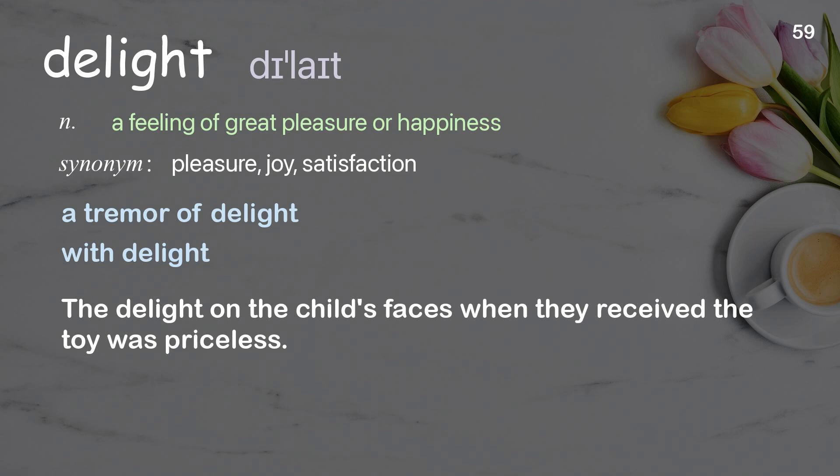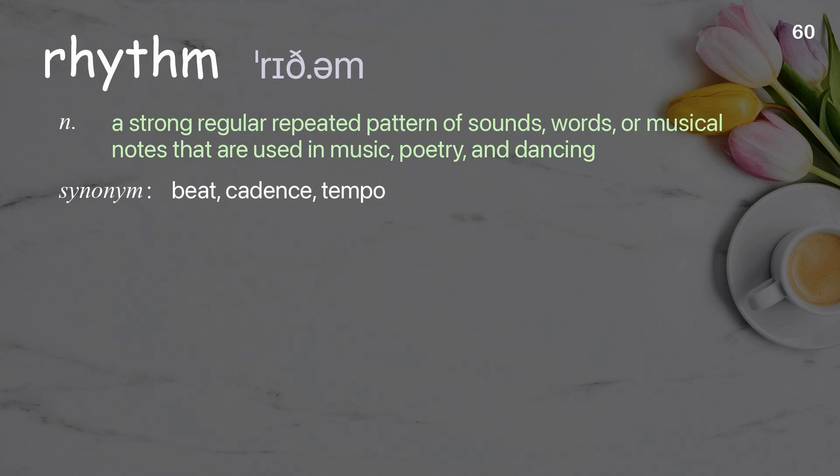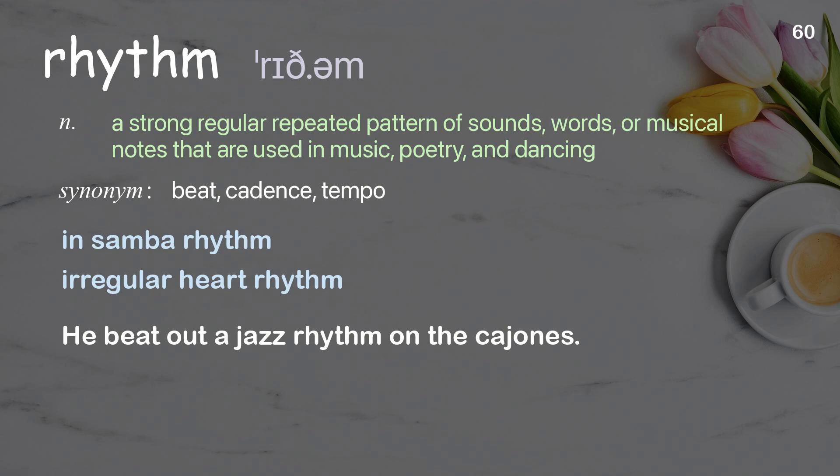Rhythm: a strong, regular, repeated pattern of sounds, words, or musical notes that are used in music, poetry, and dancing. Examples: in samba rhythm, irregular heart rhythm. He beat out a jazz rhythm on the cajones.